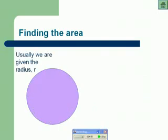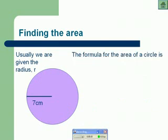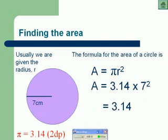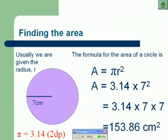So we've got to find the area of this shape. When we're finding the area, it's usually easier if we're given the radius. Our radius is 7 centimetres, and we know that our formula is pi r squared. We know that pi is 3.14, so to find the area we're going to have 3.14 times 7 squared, which is 7 times 7, giving us 153.86 centimetres squared.